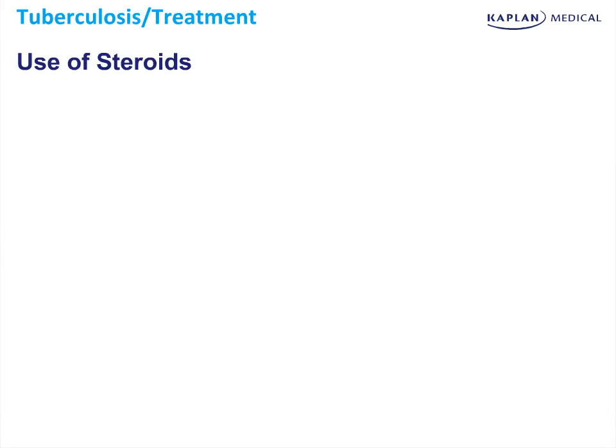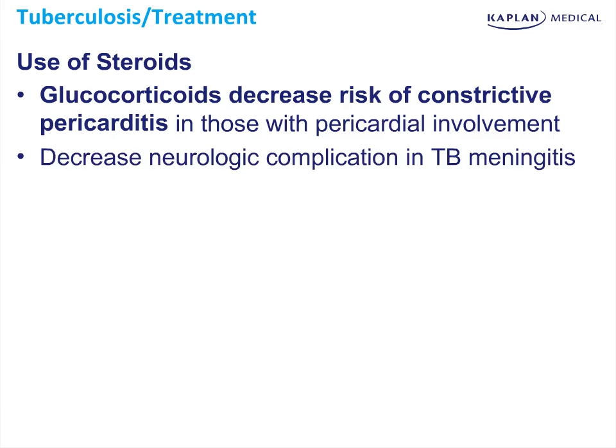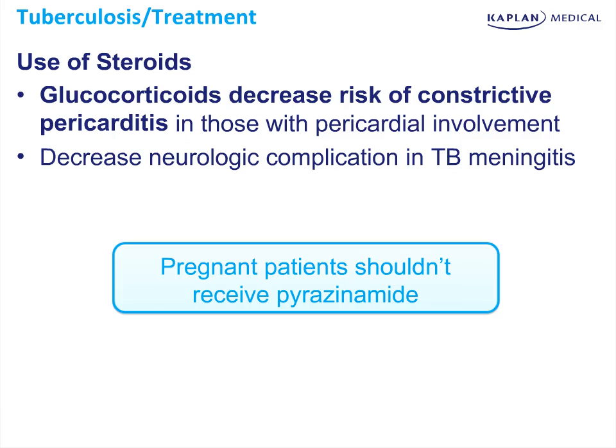Regarding the use of steroids in TB, glucocorticoids decrease the risk of constrictive pericarditis in those who have pericardial involvement, and can also decrease neurologic complications in TB meningitis. Remember, in TB treatment, pregnant patients should not receive pyrazinamide.